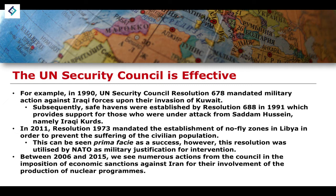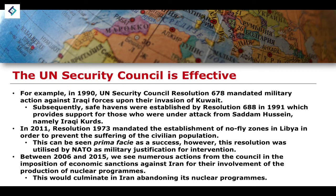We also see that the economic sanctions placed on Iran regarding their nuclear programs from 2006 to 2015 were effective in their particular mandate, which was to prevent Iran from creating or obtaining nuclear weapons. This culminated in Iran abandoning its nuclear programs, as well as the Iran nuclear deal established under the Obama administration — though it was subsequently dropped by the Trump administration. The extent to which the deal was a success remains a matter of debate beyond the scope of this lesson.